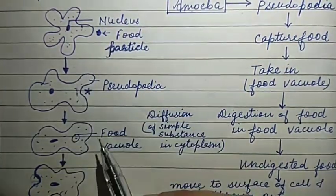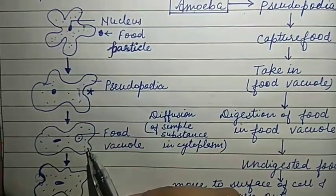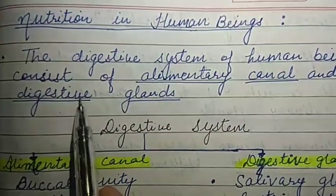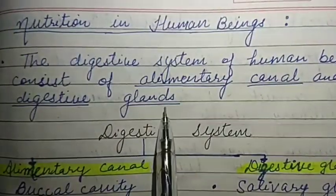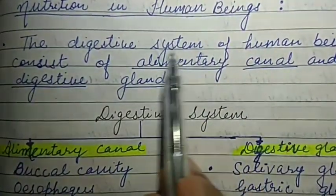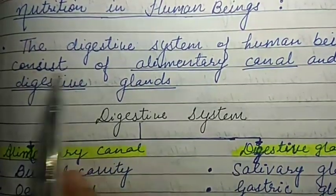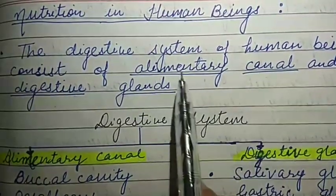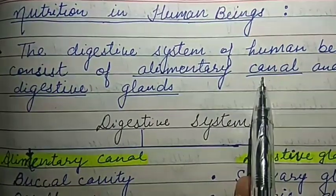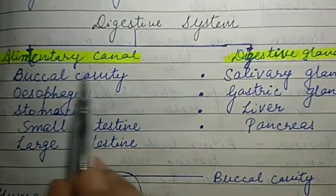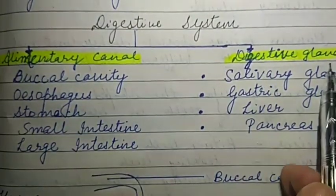This is how nutrition takes place in amoeba — an example of a unicellular organism. Now the next topic is nutrition in human beings. The digestive system of human beings consists of the alimentary canal and digestive glands. The alimentary canal begins from the mouth and ends at the anus. So the human digestive system consists of two main parts: the alimentary canal and the digestive glands.